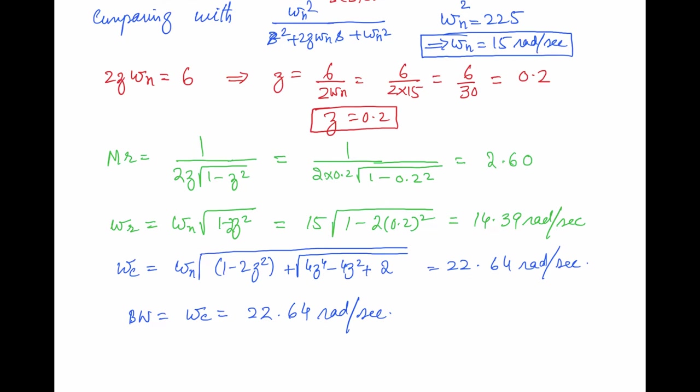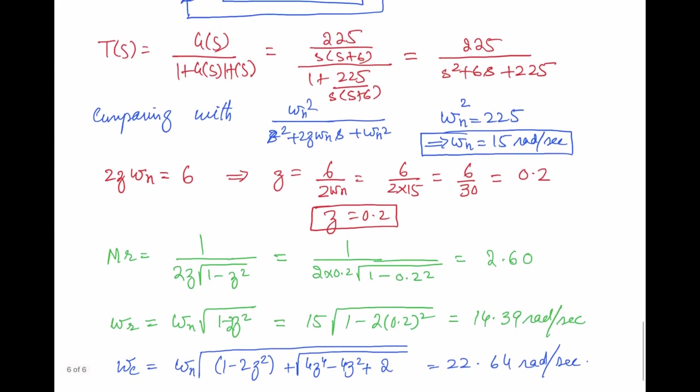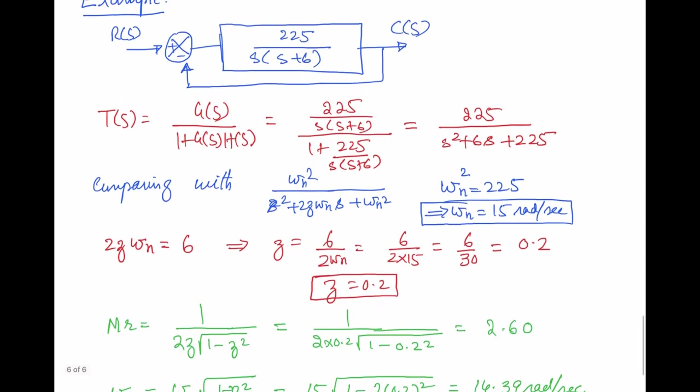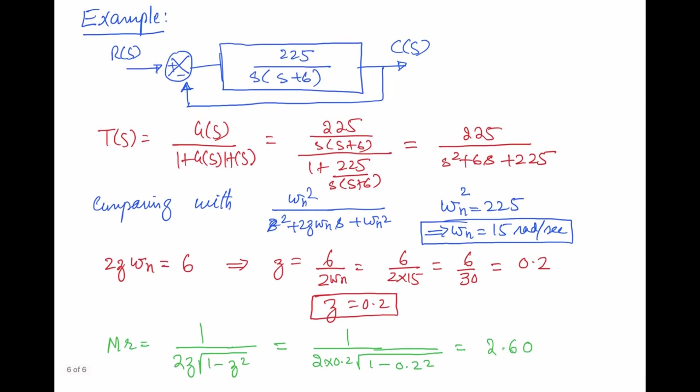In conclusion, this video has shown how to determine the resonant peak, resonant frequency, gain crossover frequency, phase margin, and bandwidth for a second order system, and demonstrated these calculations through a numerical example.